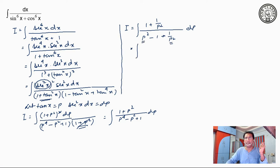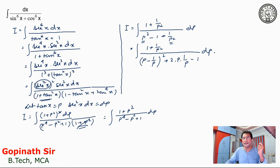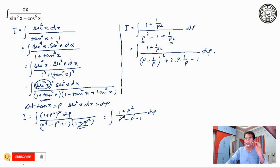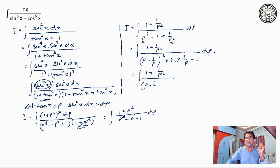Now, p square plus 1 by p square — I will use the a square plus b square formula here. It is p minus 1 by p whole square plus 2ab, which gives plus 2 minus 1, so plus 1. I have expanded using a minus b whole square plus 2ab instead of a plus b whole square minus 2ab — you will understand why if you go through my video on special integrals. So we are having 1 plus 1 by p square in the numerator, and p minus 1 by p whole square plus 1 in the denominator.